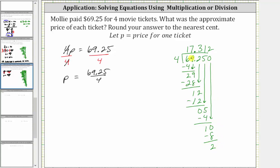But now we can stop because there's a two in the third decimal place or the thousandths place value. We round down to approximately $17.31. Which means the approximate price for each ticket was $17.31.